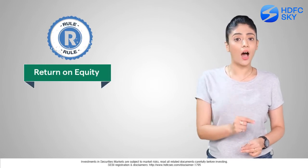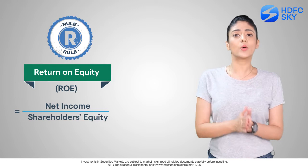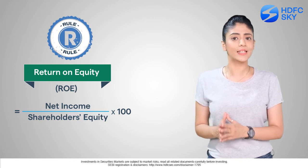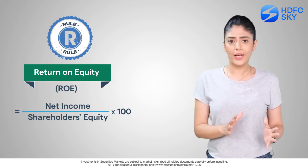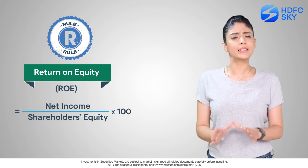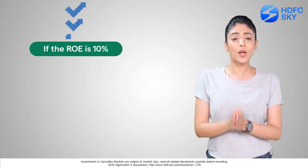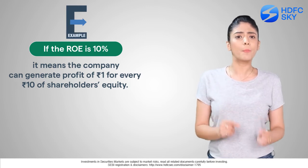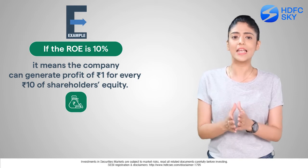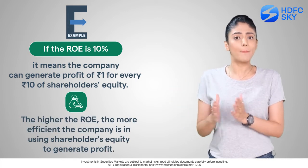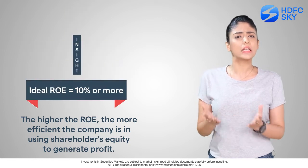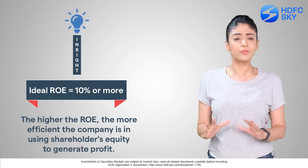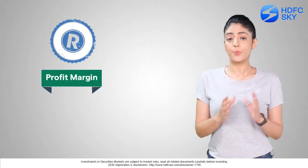Number two: Return on Equity, yani ki ROE. Return on Equity measures a company's ability to generate income relative to its shareholders' equity. Both ROA and ROE are expressed in percentage terms. If the ROE is 10%, it means the company can generate 1 rupee in profit for every 10 rupees of shareholders' equity. Higher ROE is better — an ROE of 10% or above is considered good.